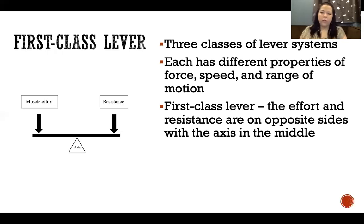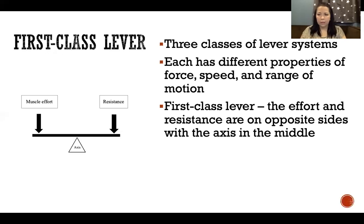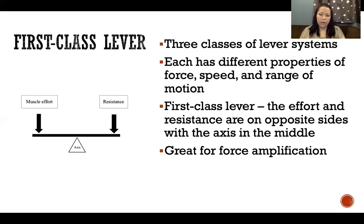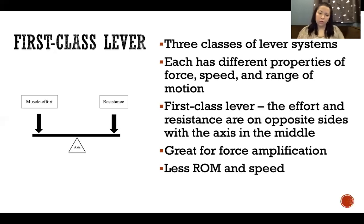A first class lever is where the effort and resistance are on opposite sides with the axis in the middle, just like we see in this diagram here. The axis is in the middle, then muscle effort on one side, resistance on the other. The axis doesn't have to be exactly in the center — it just means that the muscle effort and the resistance are on opposite sides of the axis. This type of lever is great for force amplification, allowing us to produce less force but achieve a greater amount of movement or resistance moved. The downside is we have less range of motion and speed with this type of lever.